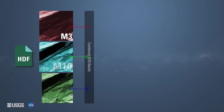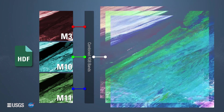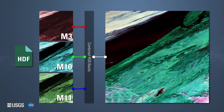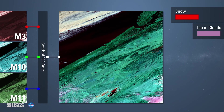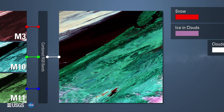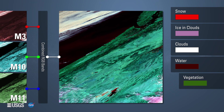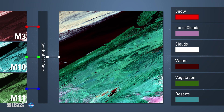Another band combination is M3, M10, M11, which highlights snow and ice. Here is the same location shown using the M3, M10, M11 band combination. In this band combination, snow is shown as red, ice and clouds as light pink, clouds are white, water is shown as dark red, vegetation as green, and deserts are a light blue-green color.